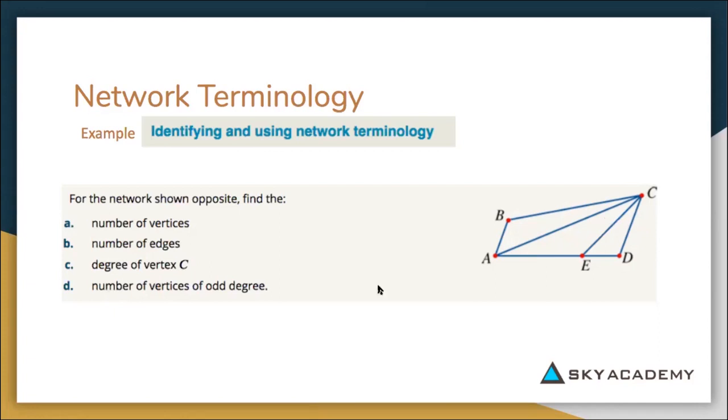And how many vertices have an odd degree? So B has an even degree because it only has two lines coming out of it, so not B. A has three lines coming out of it, so that's one that has an odd degree. E has three lines coming out of it, so that's also an odd degree, so that's two vertices having an odd degree. D has two so that's not odd, and C has four so that's not odd. So the number of vertices of odd degree is just A and E, so that's two.